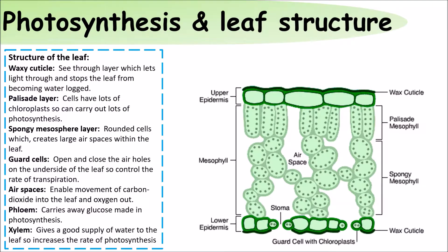The structure of the leaf is built to ensure the maximum amount of photosynthesis can happen.